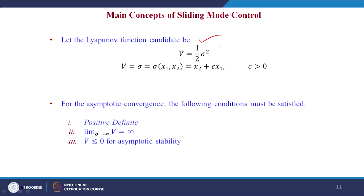We must note that the selection of the Lyapunov function candidate not only allows us to analyze stability, but also helps us in designing the controller. For asymptotic convergence the following conditions must be satisfied: V must be positive definite; as σ → ∞, V → ∞; and the time derivative V̇ ≤ 0 for asymptotic stability.